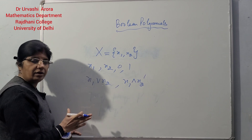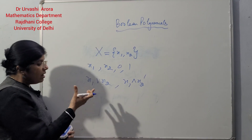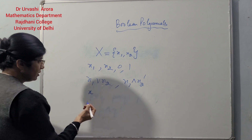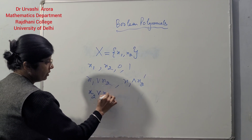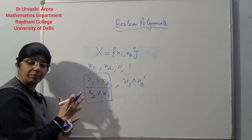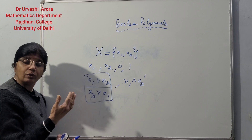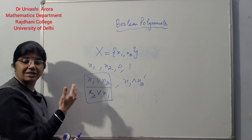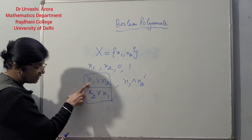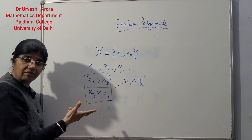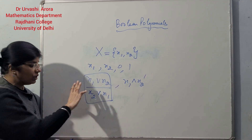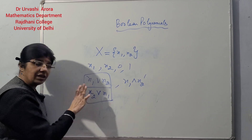A few things which have to be noted when we have defined Boolean polynomials like this: consider the Boolean polynomial x1 join x2, and consider another Boolean polynomial x2 join x1. Although they appear to be the same, they will not be called equal. Two Boolean polynomials will be called equal if they are the same character by character, symbol by symbol. If you compare these two polynomials, the first symbol of the first is x1 and the first symbol of the second is x2 — they differ in the first symbol. Then the join operator comes, and then x2 vs. x1 — they differ in the second symbol also. So these two polynomials, although they appear to be the same, will not be regarded as equal.